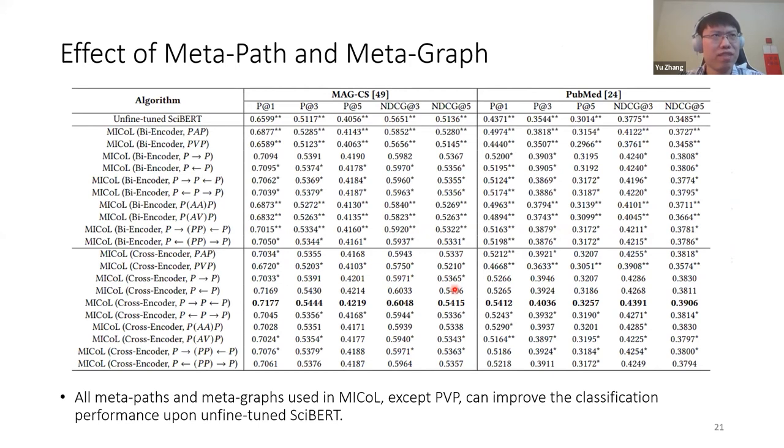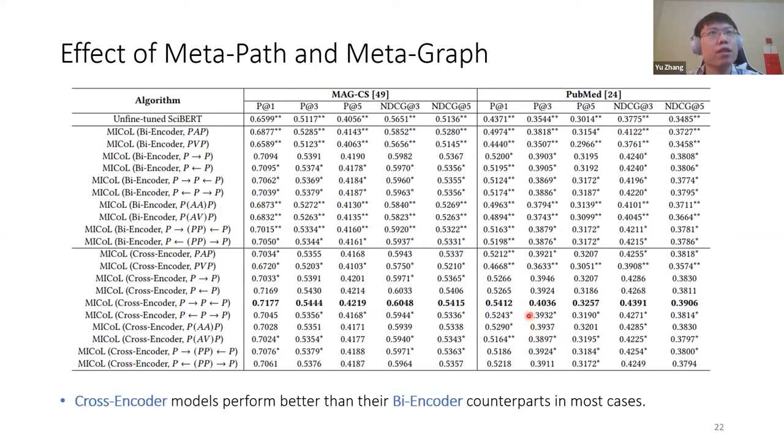So in previous slides, I only showed the result of some citation-based metapaths. Now I show the complete list of all the 10 possibilities. And you can find that all metapaths and metagraphs used in MICO, except paper-venue-paper, can improve the classification performance upon unfine-tuned SciBERT. This indicates the generalizability of our framework. For paper-venue-paper, actually it performs not so well because venue is too weak to distinguish between those fine-grained labels. So actually we have some mathematical explanation on what kind of metapaths may perform well in our MICO framework. Second, we find that cross-encoder models perform better than their bi-encoder counterparts in most cases. So better to choose cross-encoder.